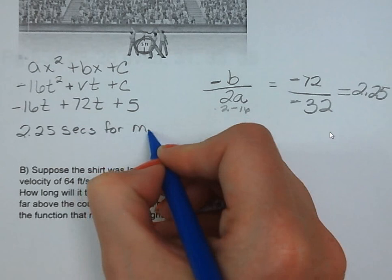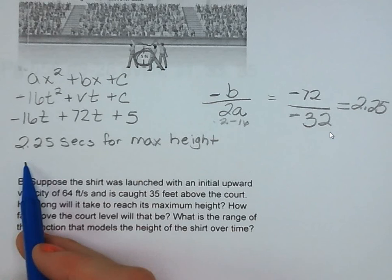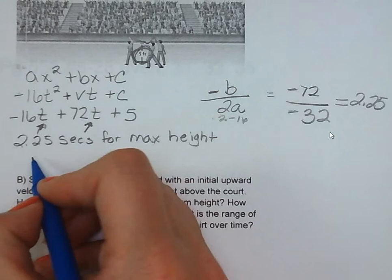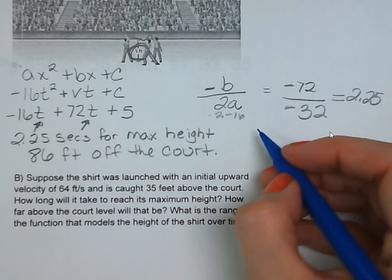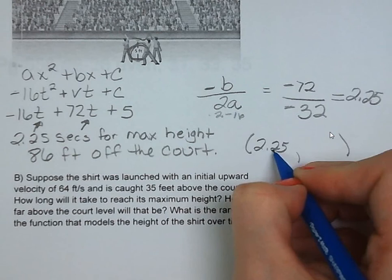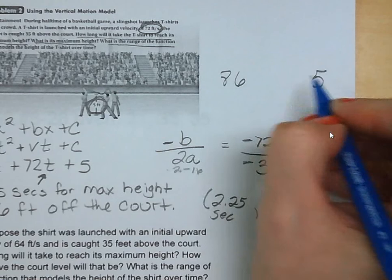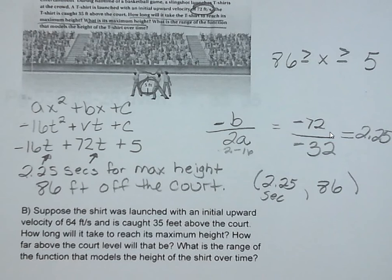Now, in order to find what that maximum height is, you need to plug in 2.25 for t in our equation. Use your calculator for this. When you type it all in, you're going to get that it is 86 feet off the court. The final question is, what is our range for this projectile, this object that's launched, this t-shirt. We know that it's going to be between 5 feet and 86 feet. So the height is going to be between 5 feet and 86 feet.